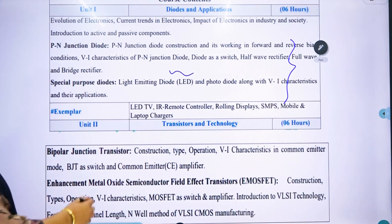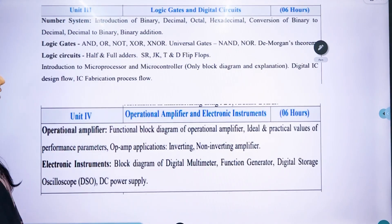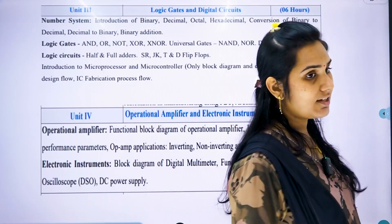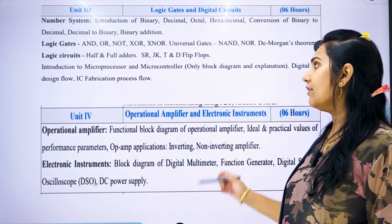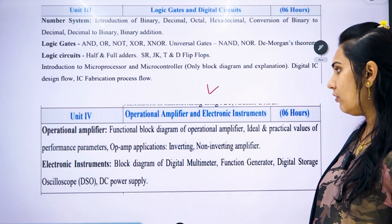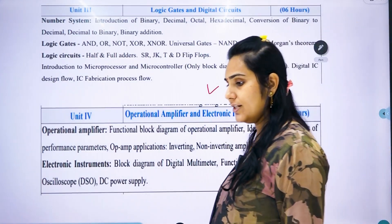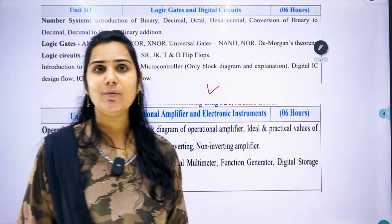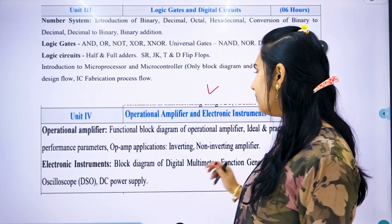Unit number 2 is basically about transistors. Unit number 3 is about logic gates and how digital circuits can be operated with the help of logic gates. Unit number 4 is about all the electronic instruments which we are going to use in the laboratory while performing a practical — these are discussed in chapter number 4.